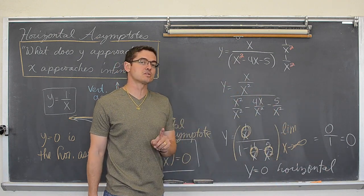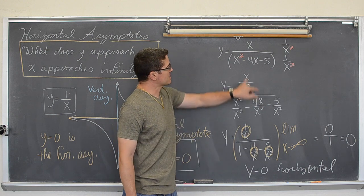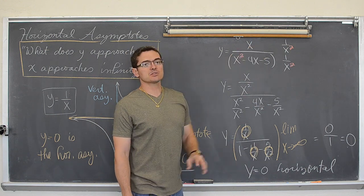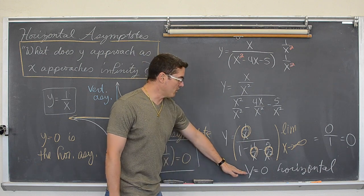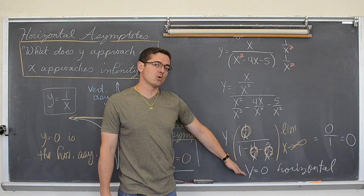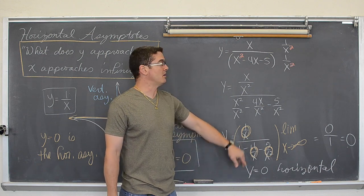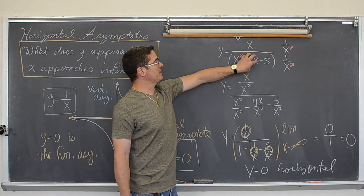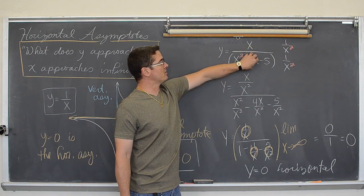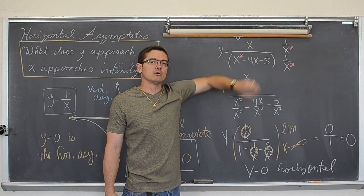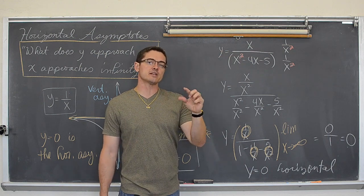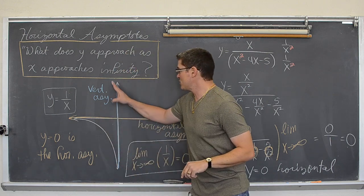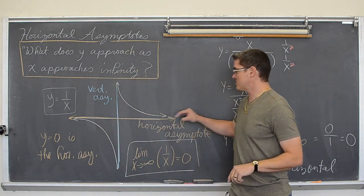One of the rules says: if the bottom degree is larger than the top degree, then you are always going to get a horizontal asymptote at y equals zero. That is because the bottom is growing faster than the top. Put a really huge number underneath a relatively small number, and you always get a very small decimal that approaches zero as x gets larger.